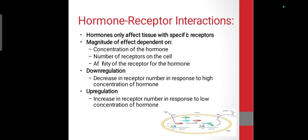For hormone-receptor interactions, there are two important terms: down regulation and up regulation. Down regulation is a decrease in receptor number in response to high concentration of a hormone. Up regulation is an increase in receptor number in response to low concentration of a hormone.